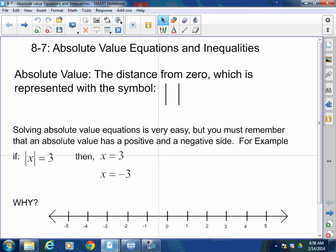We already learned how to deal with compound inequalities, so now it's time for absolute value. Please remember that absolute value is the distance from zero, which is represented by this symbol right here. It looks like two parallel lines.